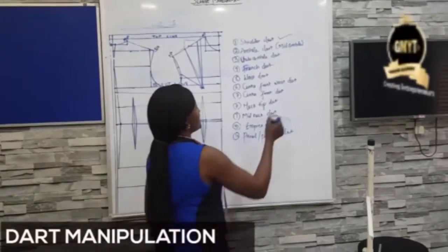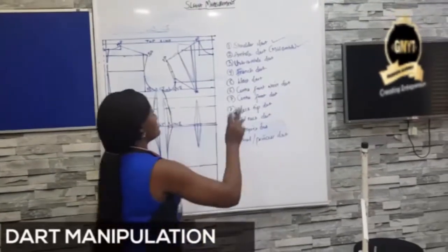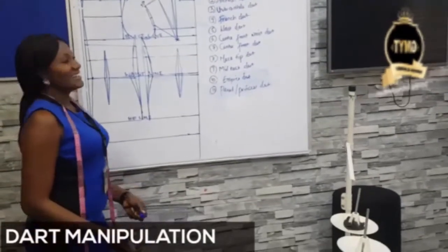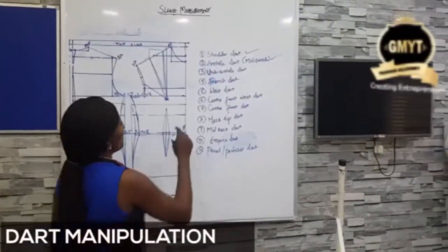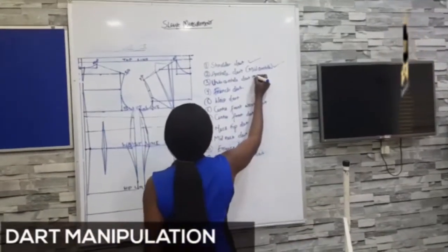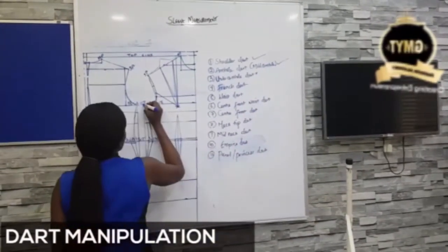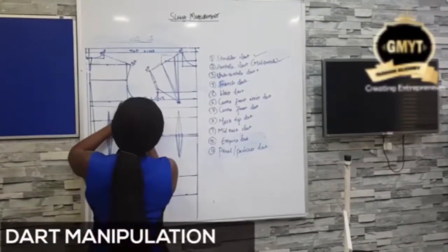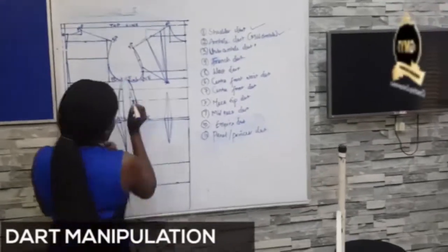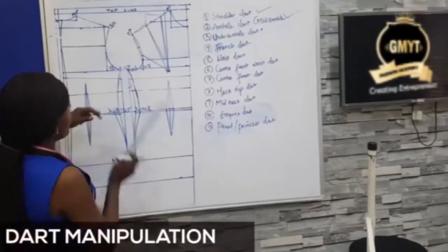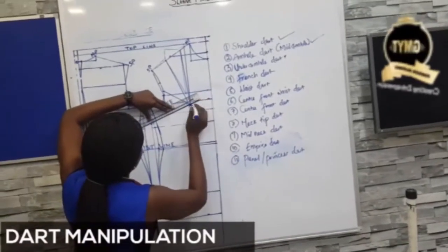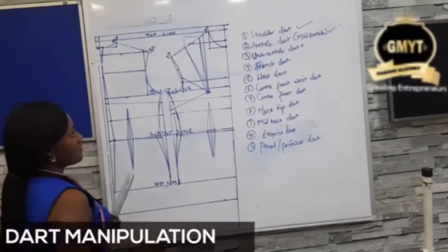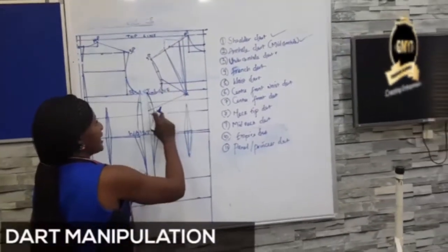I have now completed a mid-armhole dart. The mid-armhole is the midpoint of your armhole. Next is my under-armhole dart. To get my under-armhole dart, from your UP — that is your underarm point — bring down 8 cm. From that 8 cm point, use your ruler to rule a straight line to your point X. This is my mid-armhole and this is my under-armhole dart.